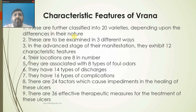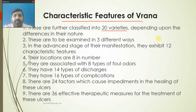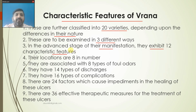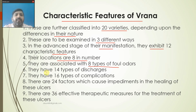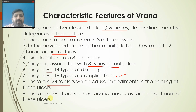Now seeing the characteristics of a Vrana: they are further classified into 20 varieties depending on differences in their nature. They are examined in 3 different ways called Darsana, Prashna, and Sparshana. In advanced stage of manifestation they exhibit 12 different characteristics. Their locations are 18 in number, they are associated with 8 types of smell, there are 14 types of discharge from Vrana, 16 types of complications, 24 factors causing impediment to healing, and 36 effective therapeutical measures for treating ulcer.